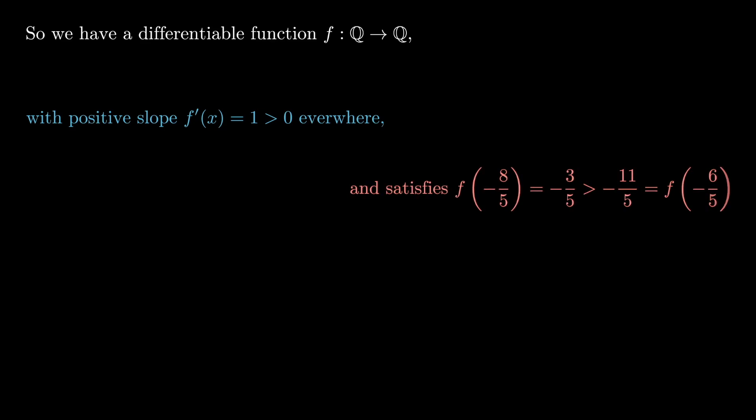So if we think about this for a moment, what we have is a function with positive slope. I showed before that f prime of x was equal to 1, and that's positive everywhere. And moreover, we just showed that f of minus 8 on 5 is minus 3 on 5, but minus 3 on 5 is certainly greater than minus 11 on 5, which is equal to f of minus 6 on 5.